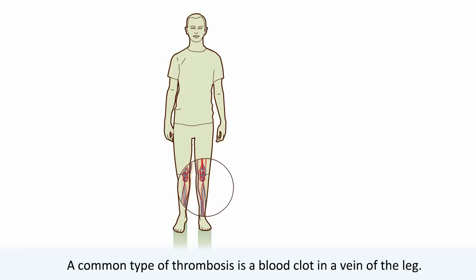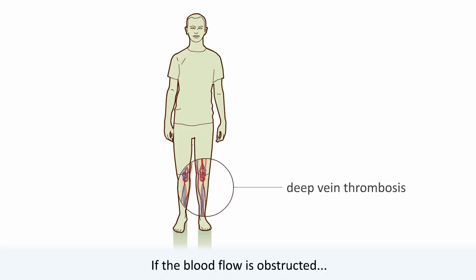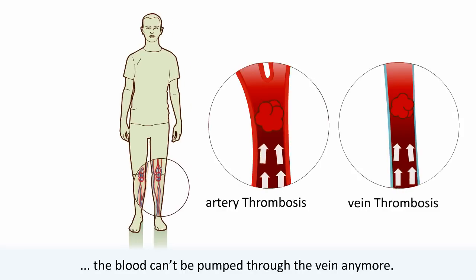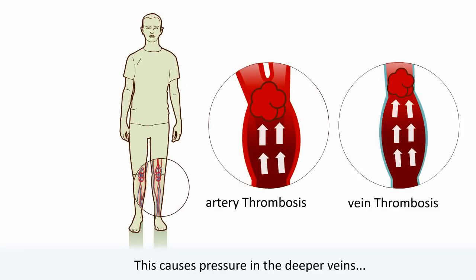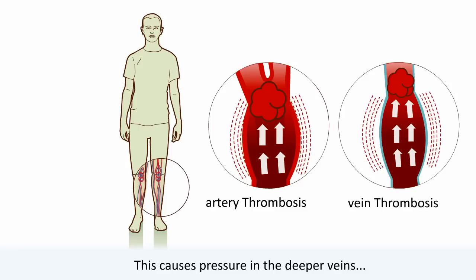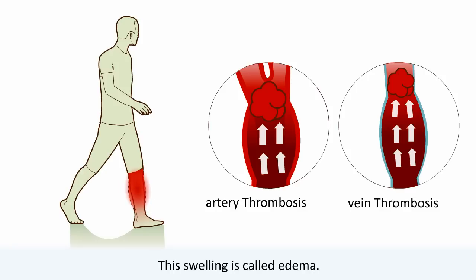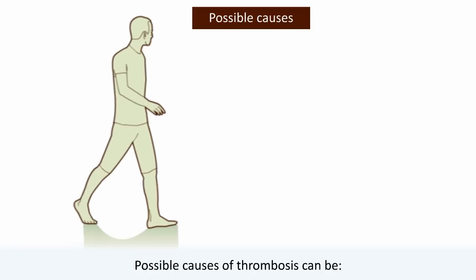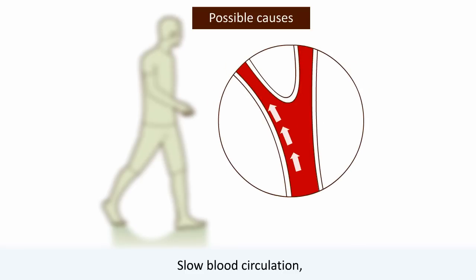A common type of thrombosis is a blood clot in a vein of the leg — we call this deep vein thrombosis. If the blood flow is obstructed, the blood can't be pumped through the vein anymore. This causes pressure in the deeper veins and capillaries, and the leg gets red, painful, and swollen. This swelling is called edema.